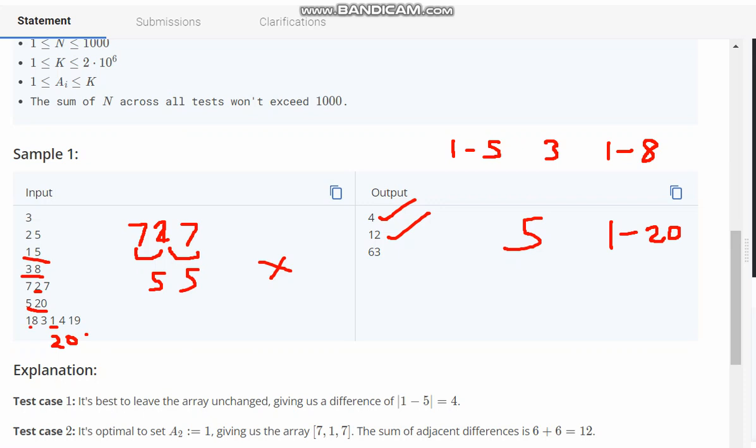The sum of adjacent differences is 18 minus 3 which is 15, 20 minus 3 is 17, 20 minus 4 is 16, and 19 minus 4 is 15. If you add them up, this would be 33, this would be 30, giving a total of 63. So this will give us the maximum.